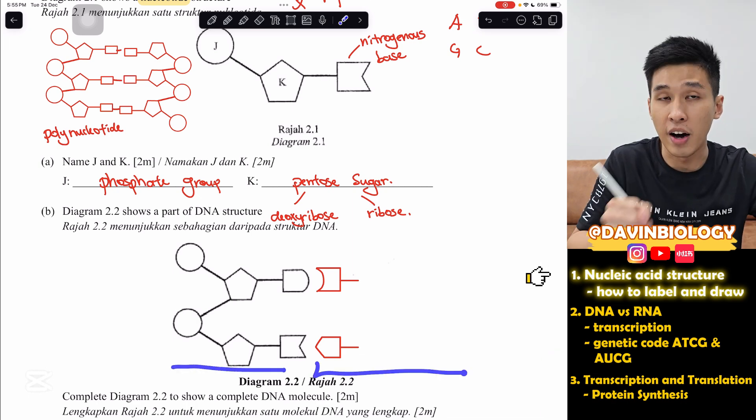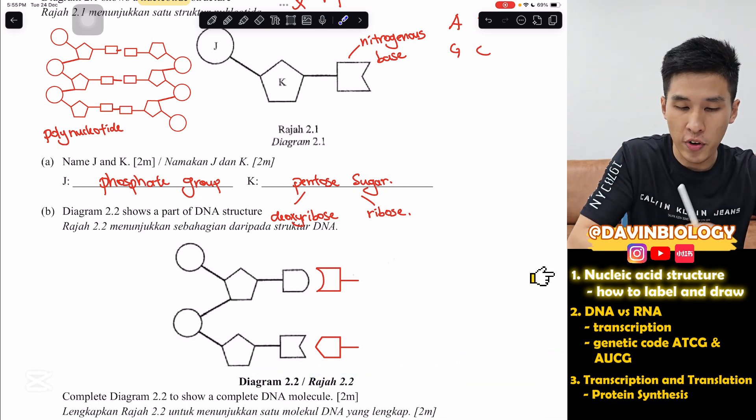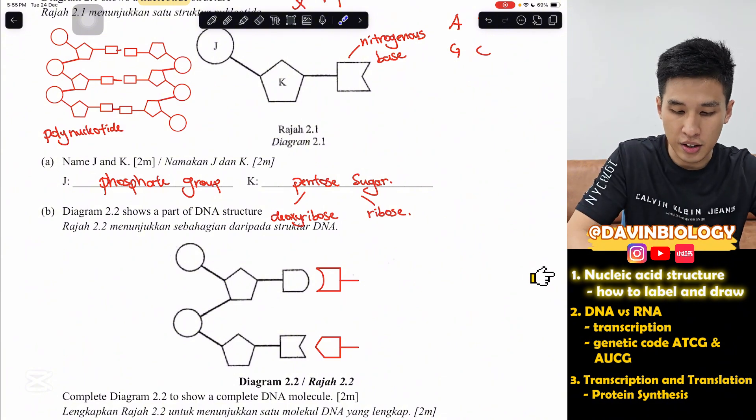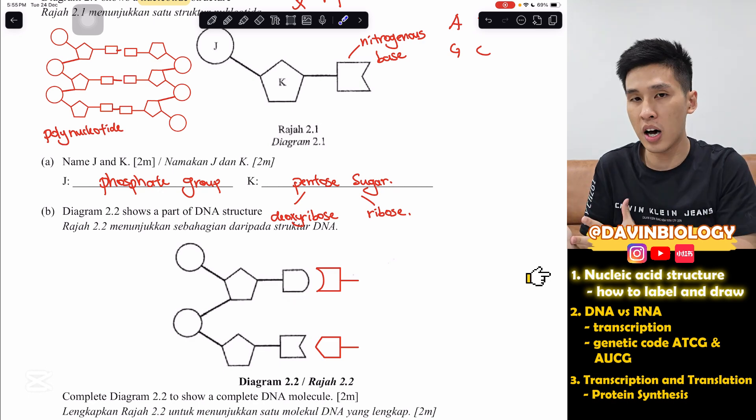Now, the last one, this is called the nitrogenous base. Nitrogenous base, they don't come in fixed shape because there are four kinds of nitrogenous base which carry four different types of genetic codes. Genetic codes, they come in ATGC. You can remember it as Akutaguna condom. Different genetic codes will have different shapes. So basically, genetic codes form the genetic information in your DNA. Now, the next one, drawing. They ask you to draw the DNA structure. They draw half of it. They want you to complete the other half.